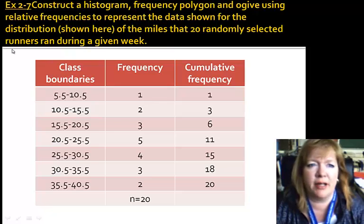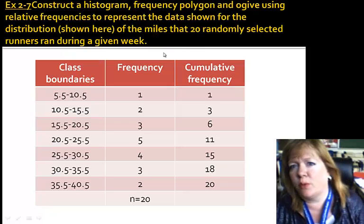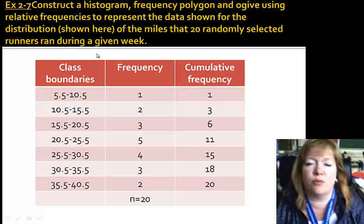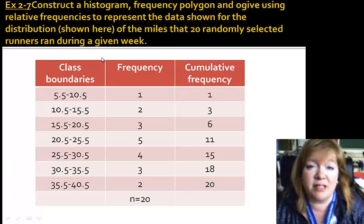We're going to do that for this data right here. This is in your book, if you look at the right page you can copy this table down. It says construct a histogram, frequency polygon, and ogive using relative frequencies to represent the data shown for the distribution of the miles that 20 randomly selected runners ran during a given week. I myself only run if somebody's chasing me, but here's the data that we have.